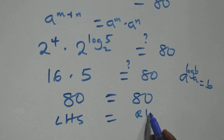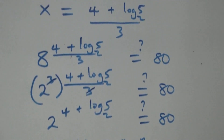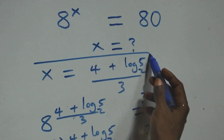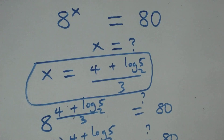We conclude that x = (4 + log₂5)/3 satisfies the given problem. Thank you for watching — don't forget to subscribe for more videos, turn on the notification bell, share this video, give it a thumbs up, and put your comment. See you next class, bye for now.